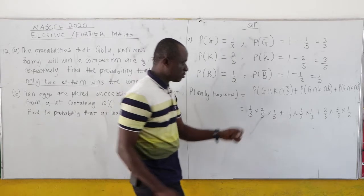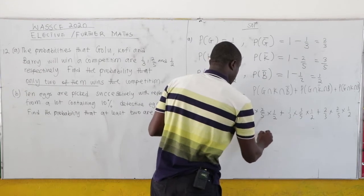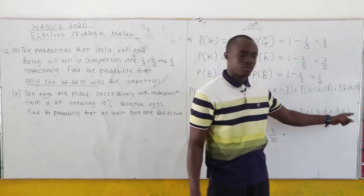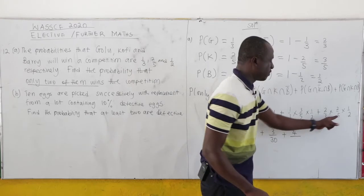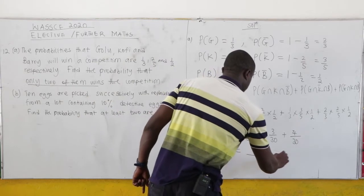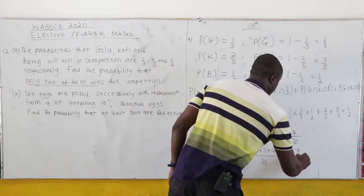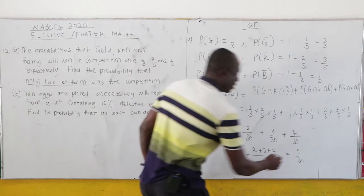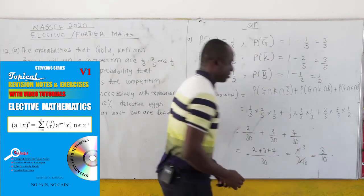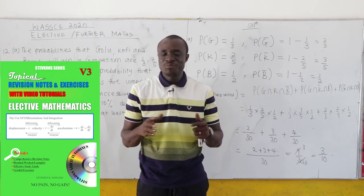For the first case: 1 times 2 times 1 gives 2, all over 3 times 5 times 2 which is 30. So that is 2 over 30. For the second case, we get 3 over 30. For the third case: 2 times 2 times 1 gives 4, all over 30. All the denominators are the same, so we have 2 plus 3 plus 4 over 30, which is 9 over 30. Cancelling by 3 gives us 3 over 10.